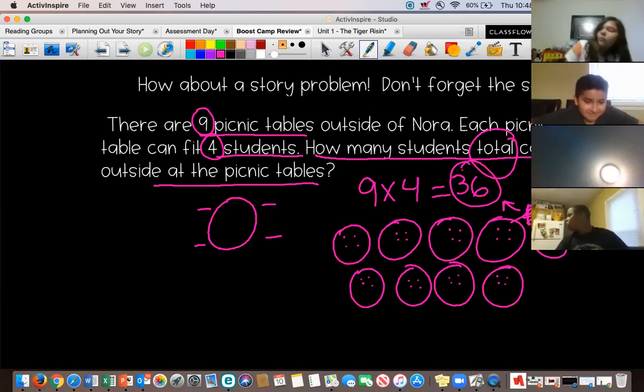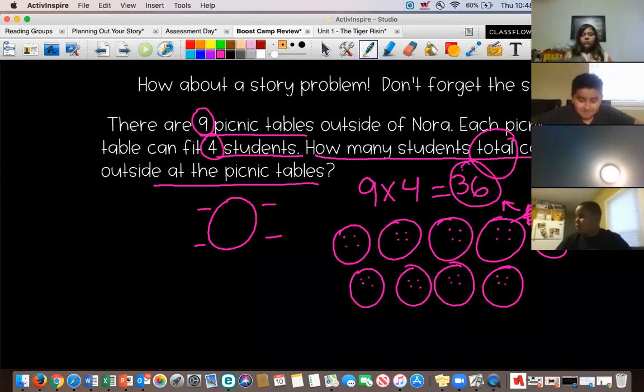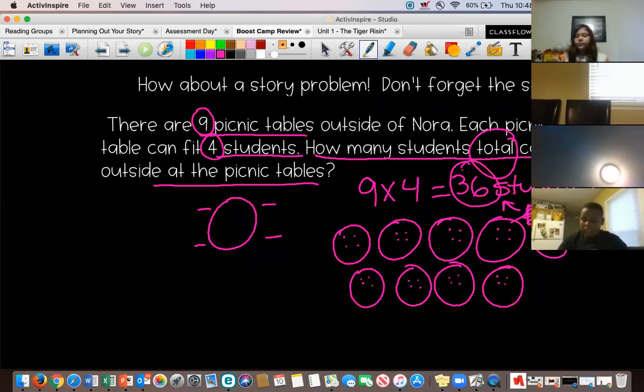We've talked about it. We need more than the same three people to speak up. Right, and then I haven't put my unit yet, so I have 36 what? What's my unit? Anybody can unmute and tell me. Students. Oh, students, 36 students can sit outside at the picnic table at Nora. Okay, we're going to talk about what your assignment is today.